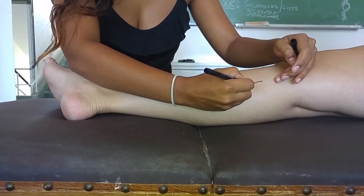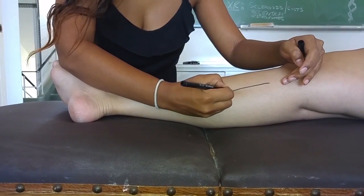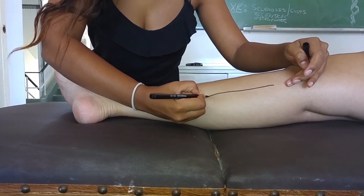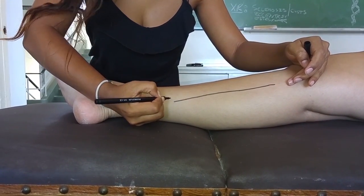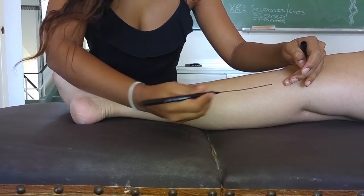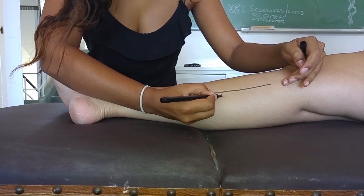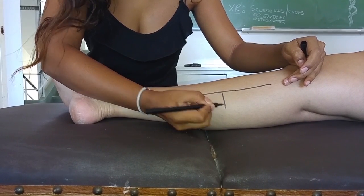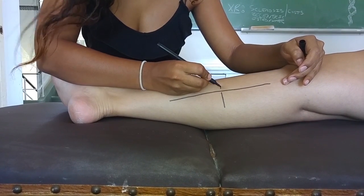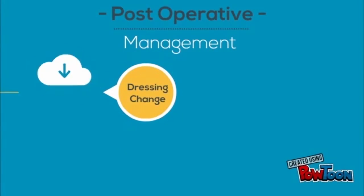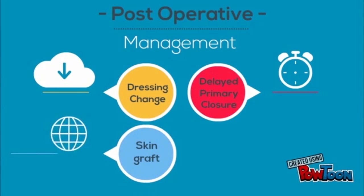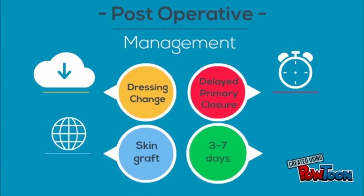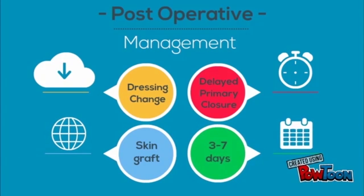Repeat on the posterior medial side to release the superficial and deep posterior compartments, taking care not to damage the saphenous nerve and vein. For post-operative management, a dressing change and delayed primary closure or skin grafting is required at 3 to 7 days.